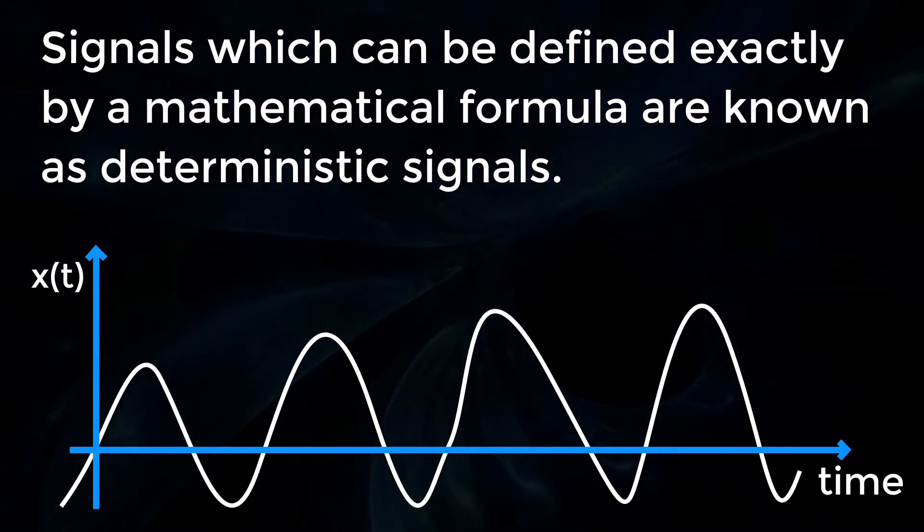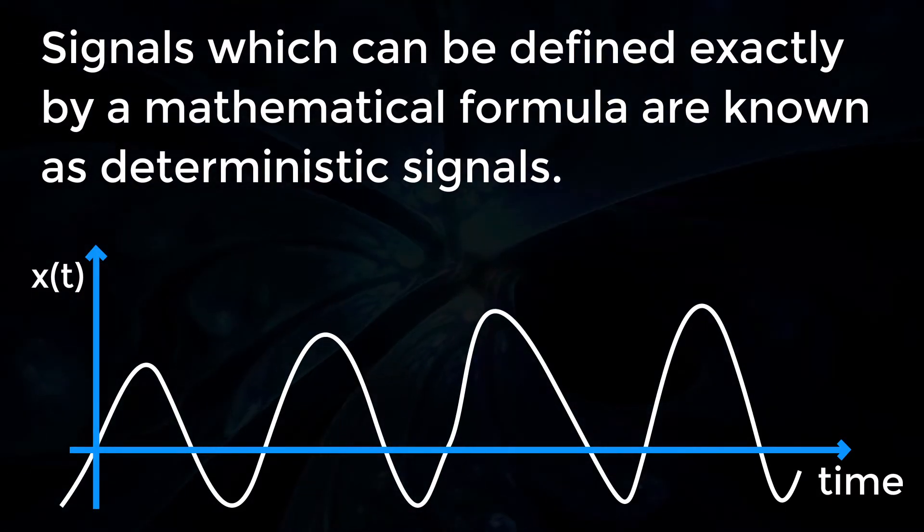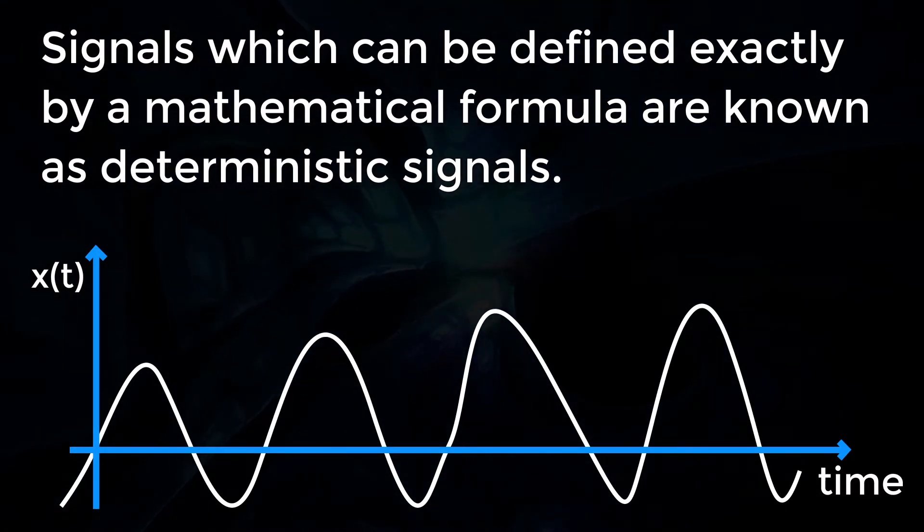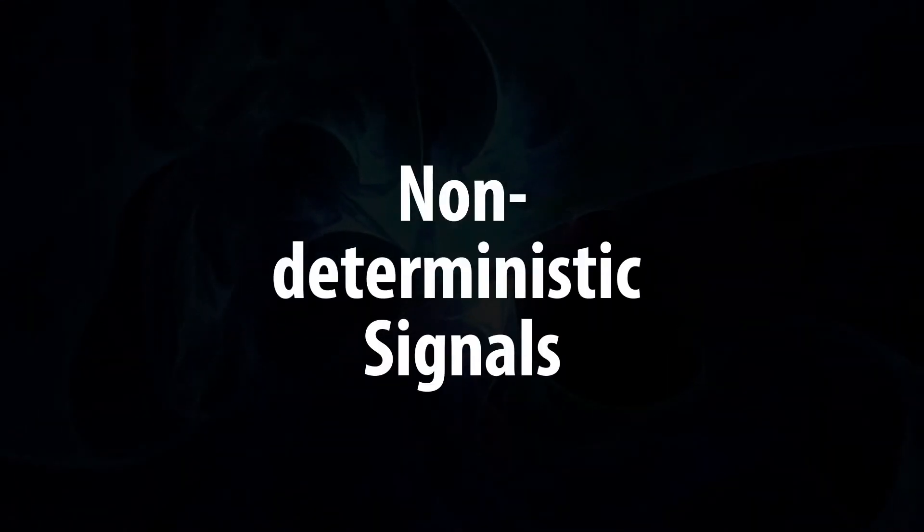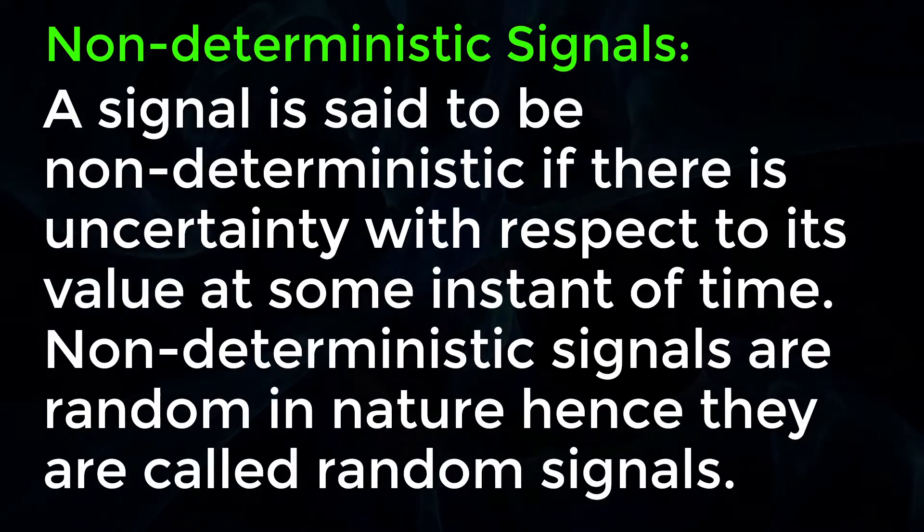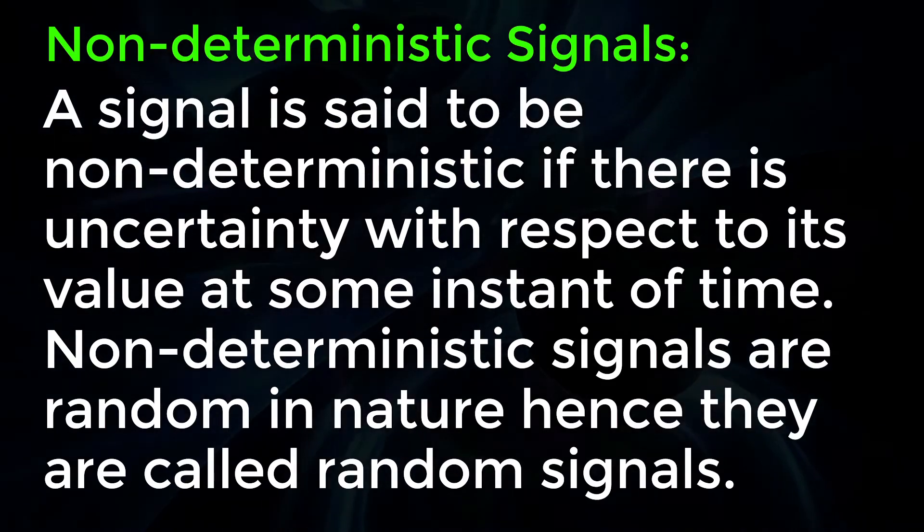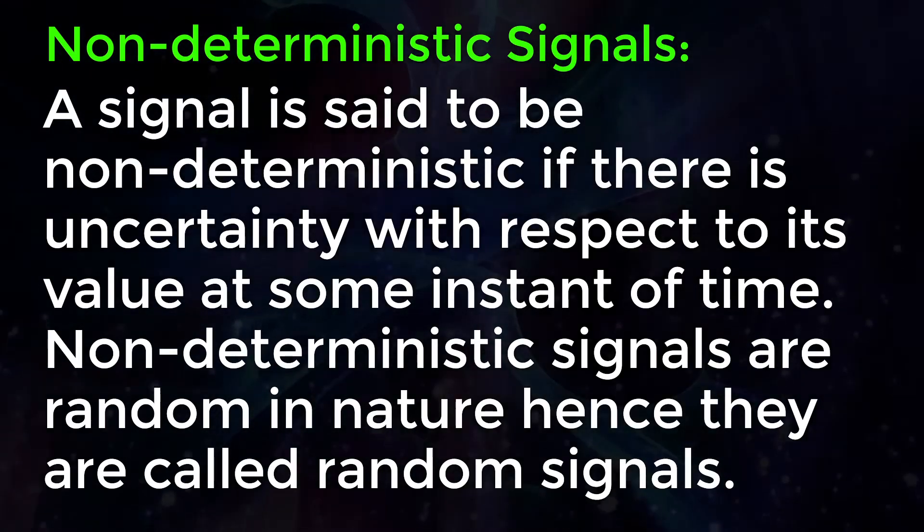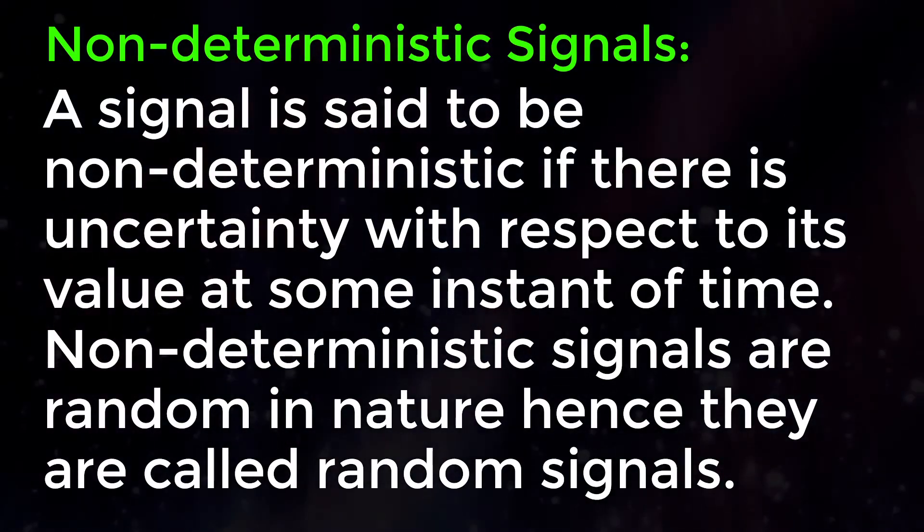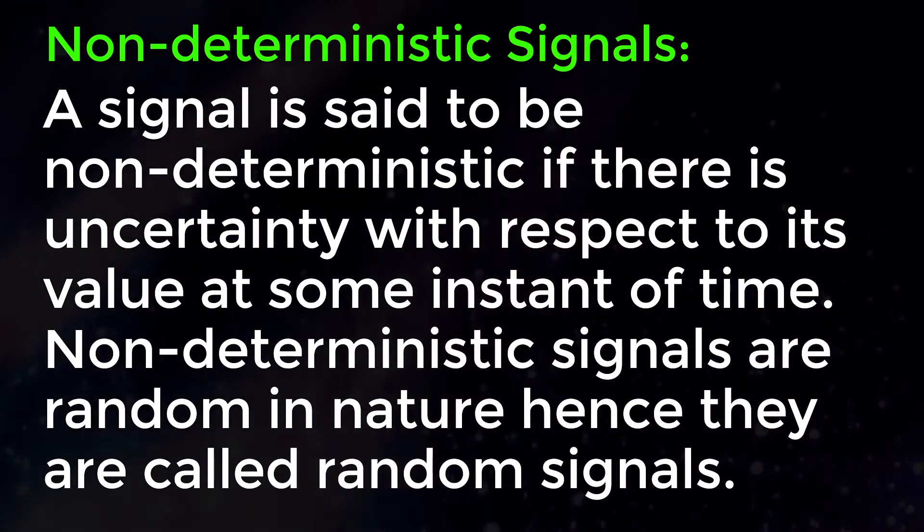All signals which can be defined exactly by a mathematical formula are known as deterministic signals. Now let's look into non-deterministic signals. A signal is said to be non-deterministic if there is uncertainty with respect to its value at some instant of time.